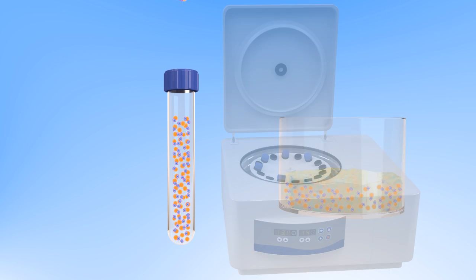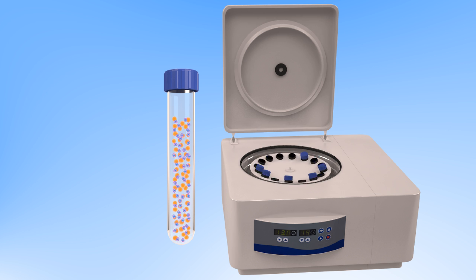This solution is processed through a centrifuge, which further separates the stem cells from the fat cells. The wash solution, oils, and fat tissue is discarded.